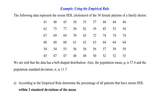The following data represent the cholesterol levels of 54 female patients of a family doctor. Notice the statement said 'of the 54 patients' — that means we're working with a population because these are all of our patients, not 54 randomly selected patients. We're told that the data has a bell-shaped distribution, which is a big deal. As soon as we see this in the question, we immediately want to be thinking: bell-shaped distribution means the empirical rule can apply. They tell us we have a mean value of 57.4 and a standard deviation of 11.7.